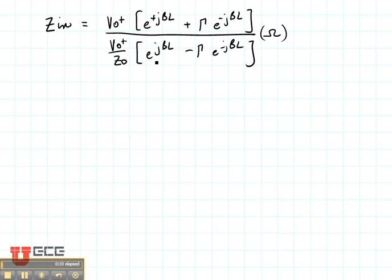Now let's divide this by E to the J beta L to get a different form. These V zeros cancel out. So that's going to give us Z naught times 1 plus the reflection coefficient times E to the minus 2J beta L over 1 minus the reflection coefficient times E to the minus 2J beta L.